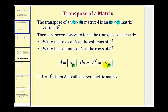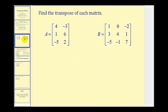Again, we're interchanging the rows and columns. If matrix A is equal to the transpose of matrix A, then we say A is called a symmetric matrix. Let's take a look at two examples of transposing a given matrix.